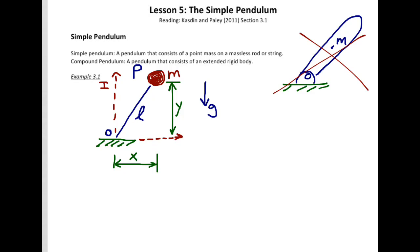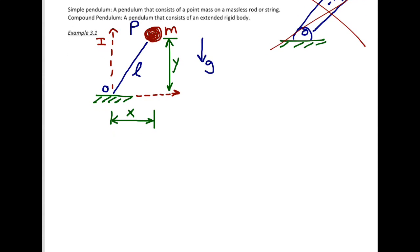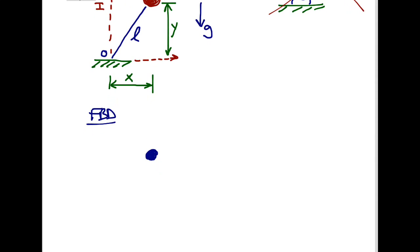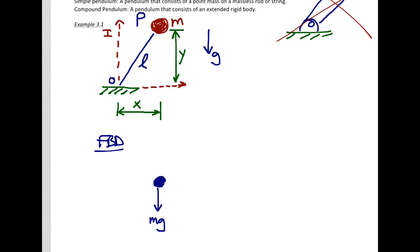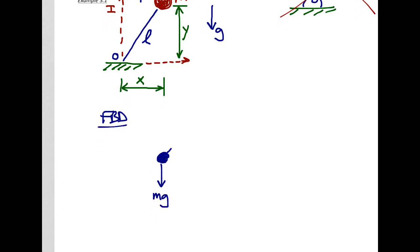Next we need a free body diagram. We're still working with particles, so the FBD is simply particle P with all forces on it. We have a force due to gravity — that's mg downward. We also have a constraint force F, because particle P can only be distance L from O, so something must keep it there. We draw force F along the line of the rod.